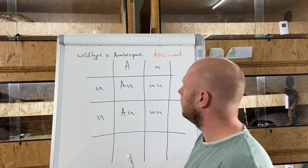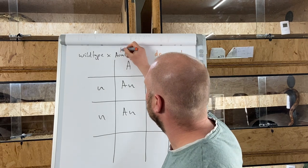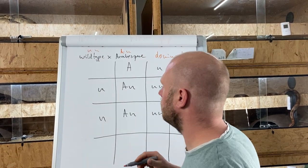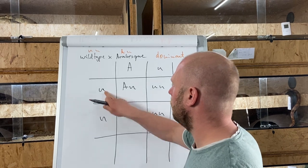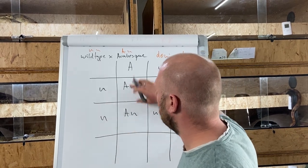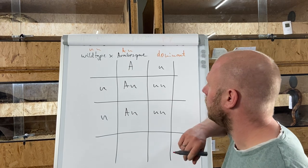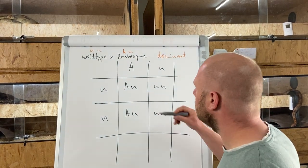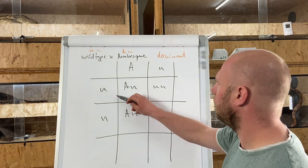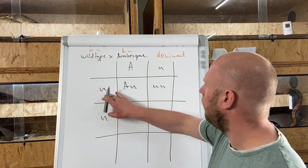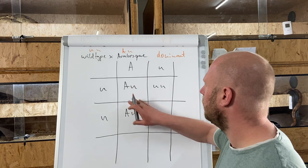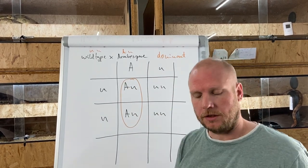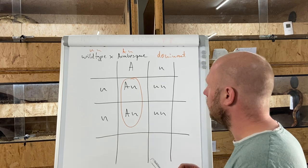The arabesque morph is represented by this abbreviation, and the wild type is represented by a double N. We fill out the Punnett square with the abbreviation for arabesque, and multiplying them out, we get 50% of the litter being visual arabesque.